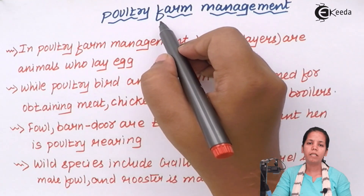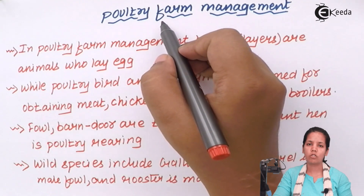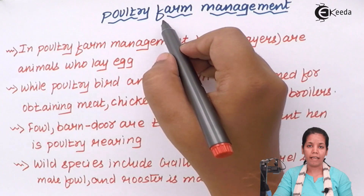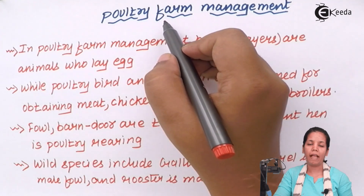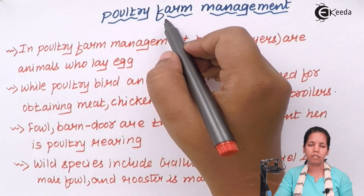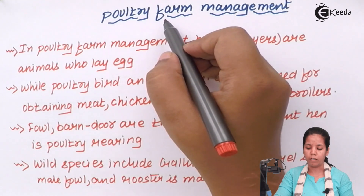Poultry farm management simply means rearing of hens or chickens just to obtain various products like egg and meat from them, and use it for human consumption or for trading purposes in the market to obtain profit from it.